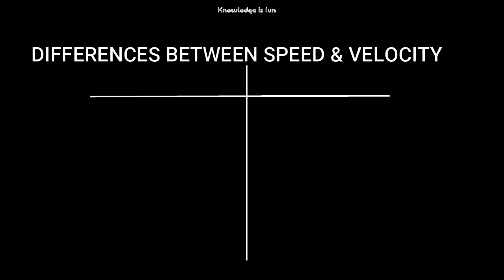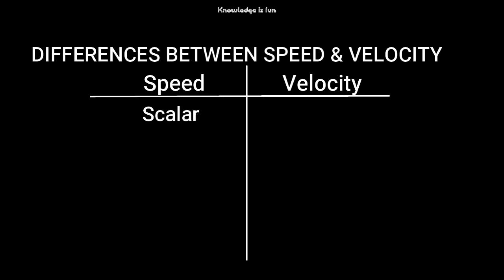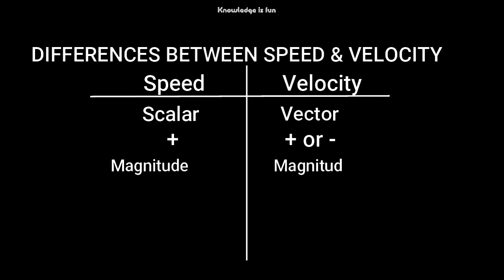Don't forget, they both describe how fast something moves, but there is a difference between them. Looking at this table: speed is a scalar quantity, while velocity is a vector quantity. Speed is always positive, while velocity can be positive or negative.